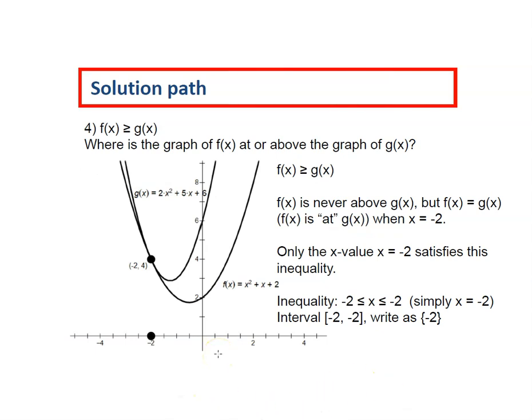And our final question, where is f of x greater than or equal to g of x? Where is the graph of f of x at or above the graph of g of x? This only happens in one place where f of x equals g of x at x equals negative 2. That's the only place. So our inequality is negative 2 is less than or equal to x is less than or equal to negative 2, which is a fairly silly way to just write x equals negative 2. And our interval is written as negative 2 to negative 2 including negative 2, which is easier to write as the set notation just negative 2.